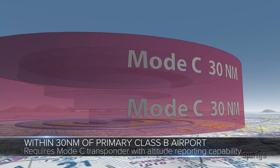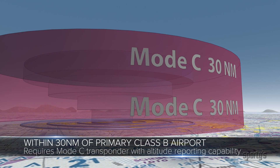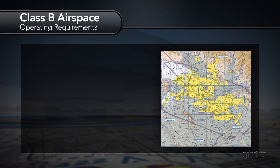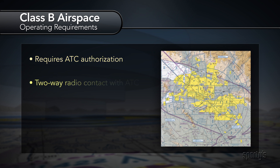Flying within 30 nautical miles of the primary airport, you must have an operating transponder and altitude reporting capability if the aircraft was certified with an engine-driven electrical system and is not classified as a balloon or glider. Before operating in Class B, you must receive authorization from ATC, maintain two-way radio communications with ATC and have an operating transponder with altitude reporting.